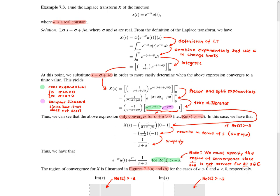The condition that the real part of s is greater than −a is a fundamental part of the answer. If we were to leave this condition out, it would imply that 1/(s + a) is valid for all complex s, which is clearly not the case. This condition is referred to as the region of convergence — the region in the complex plane for which the Laplace transform converges.